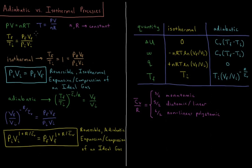Using these equations, we can summarize how quantities change during isothermal and adiabatic expansion or compression. ΔU for isothermal processes is zero because heat cancels out work; for adiabatic processes ΔU = CV̄·(Tf − Ti). Work for isothermal processes is −NRT·ln(VF/VI), cancelled by heat Q = +NRT·ln(VF/VI). For adiabatic processes, work equals CV̄·(Tf − Ti) and heat Q equals zero.